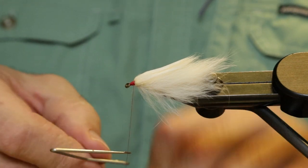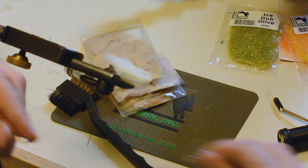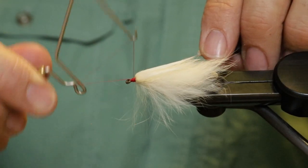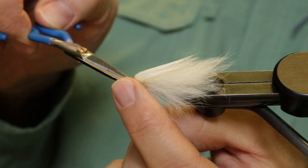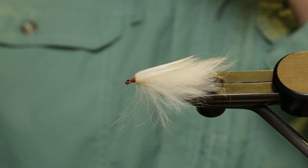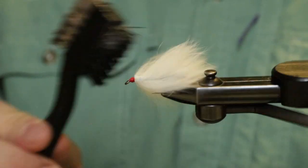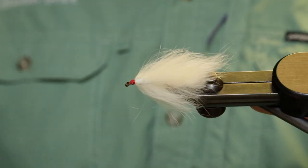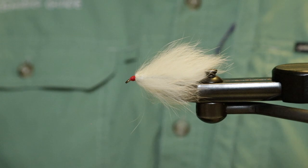We'll go ahead and do a little whip finish here. And you can finish that off with your favorite head cement of choice. We'll give this a quick brush and show you what it looks like. And there's a quick, easy flesh fly for Alaska. Thanks for watching.